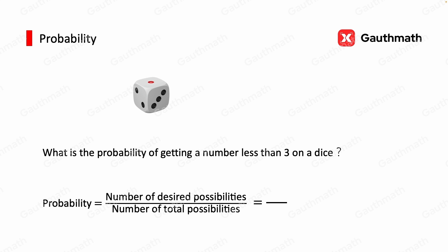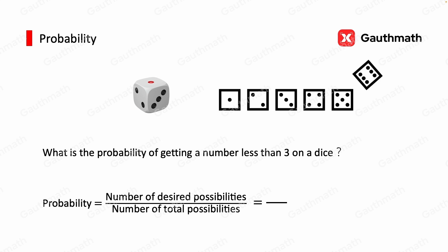For the number of total outcomes, we have 1, 2, 3, 4, 5, and 6. Notice two of them are less than 3: 1 and 2. So the number of desired outcomes is 2. Therefore, the answer is 2 over 6, which simplifies to 1 over 3.